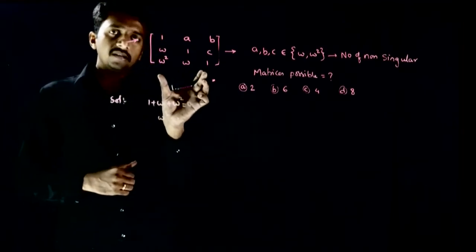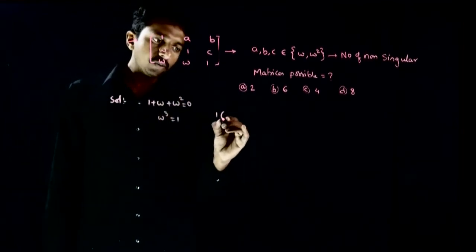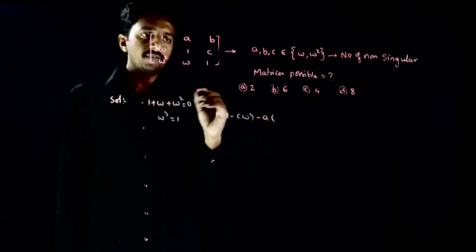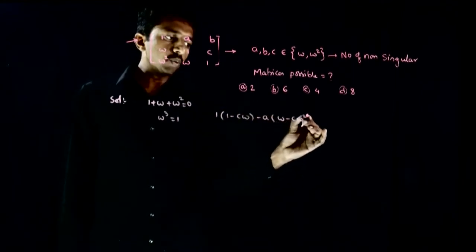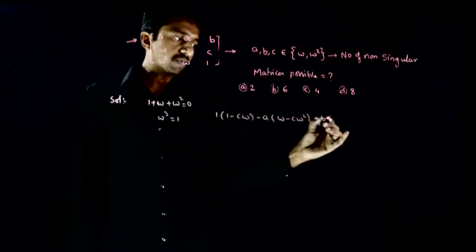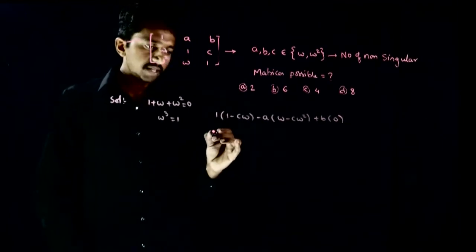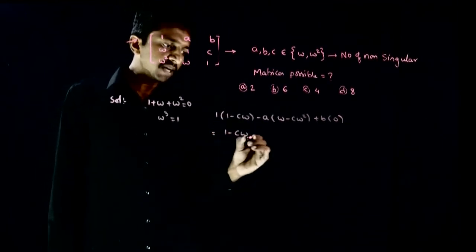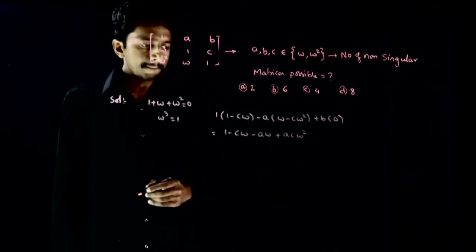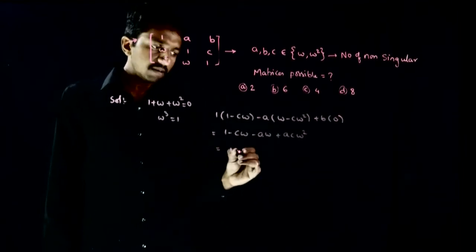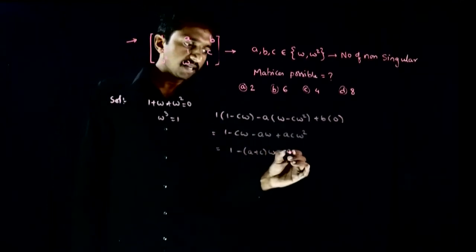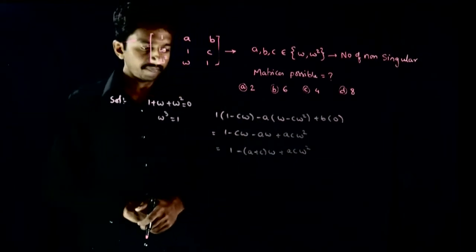Now let us try to find the determinant of this matrix. Expanding: 1·(1 − cω) − a·(ω − cω²) + b·(ω² − ω²) = 0. That simplifies to 1 − cω + a·ω² = 1 − (a + c)·ω + ac·ω².